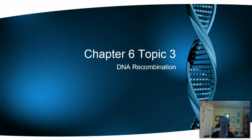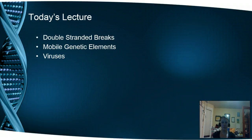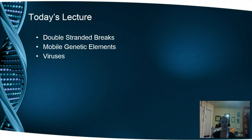Welcome to our last topic in chapter six, which is DNA recombination. In this topic, we're going to talk about the different ways that DNA can be recombined to create some genetic variation. This topic will cover double strand breaks, which is a carryover from our last topic on DNA repair, and we're also going to talk about mobile genetic elements and viruses.